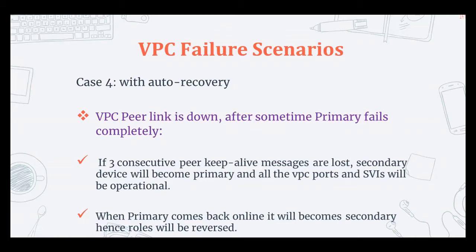When we use the auto recovery feature, this problem is resolved. Once the VPC peer link is down and after some time the primary fails completely, if three consecutive peer keepalive messages are lost, the secondary device will become the primary and all the VPC ports and SVIs related to the VPC VLAN will be functional.